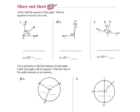For example, it says add to find the measure of the angle, write an equation to record your work. So what I would do is here for number one, they've given us two different degree measurements. They've given us this 43 degrees is for P, Q, and then 37 is for this part of the angle right here.